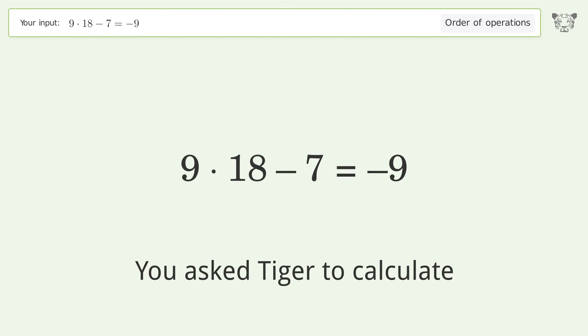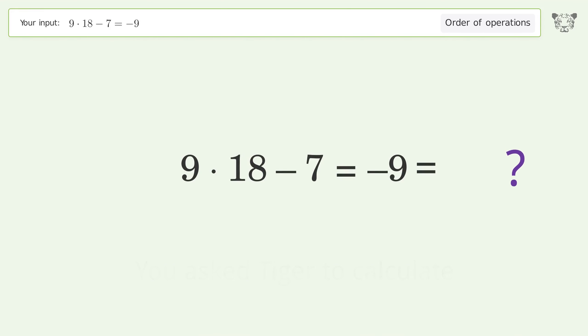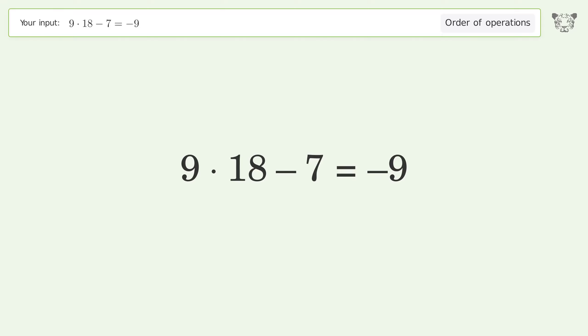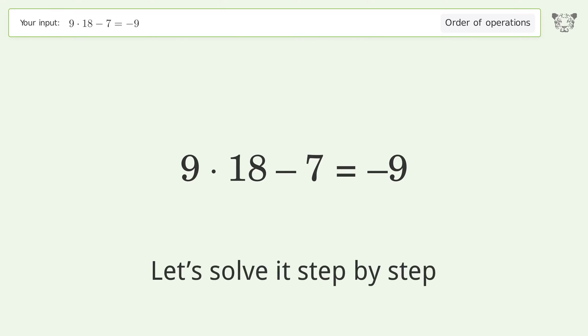You asked Tiger to calculate. This deals with the order of operations. The final result is 155 equals negative 9. Let's solve it step by step.